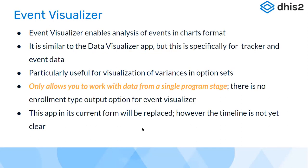Event Visualizer enables you to analyze data captured for your tracker and events programs in chart format. While Event Reports focuses on line listing and aggregate tables, Event Visualizer is about creating charts from event data. It's similar to the Data Visualizer app but specifically for tracker and event data, and is particularly useful for data elements with option sets or drop-down menus associated with them.